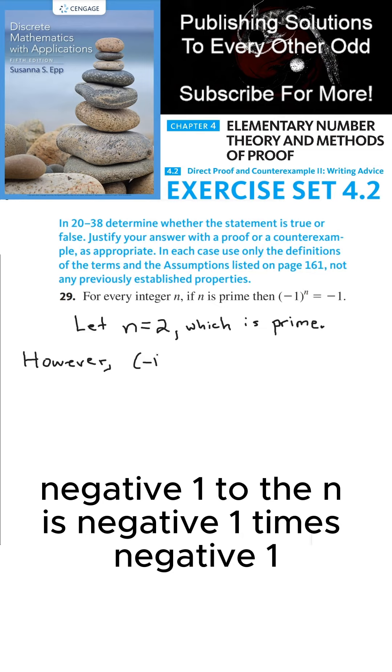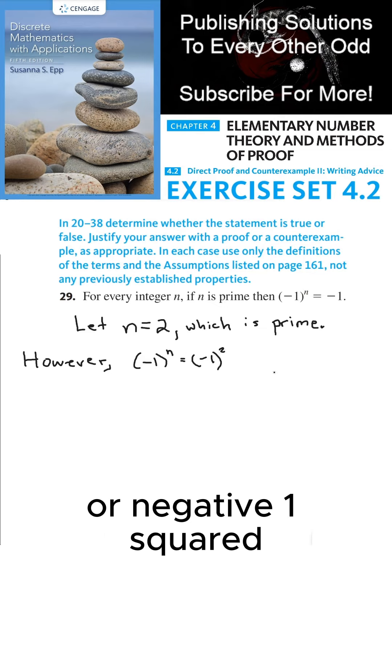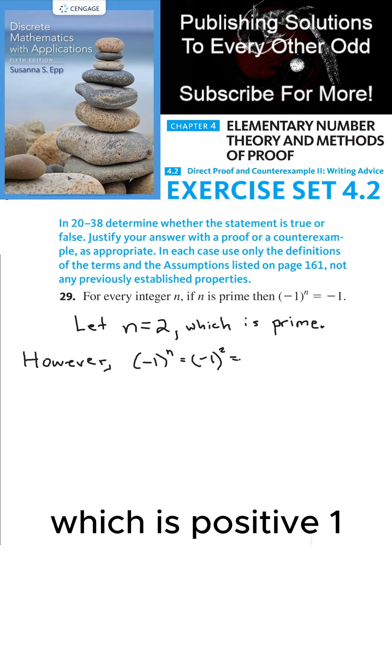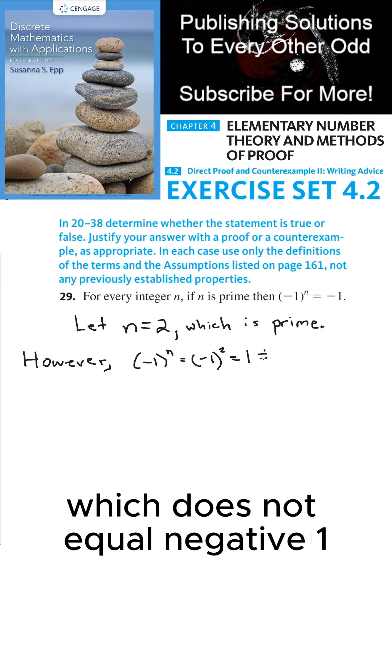However, (-1)^n = (-1)·(-1) = (-1)² = 1, which does not equal -1.